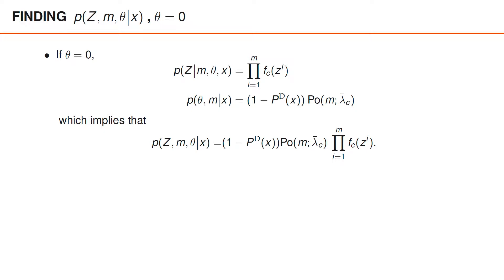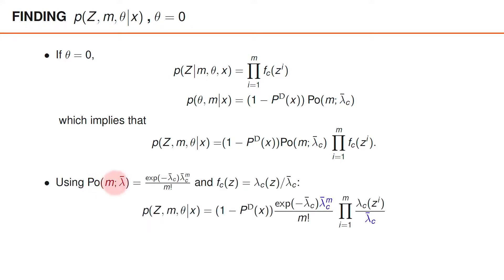To simplify things for us later on, we will express this distribution on a slightly different form by plugging in the expressions for the Poisson distribution and fc. The expression for this Poisson distribution is e to the power of minus lambda bar c times lambda bar c to the power of m, divided by m factorial. And the expression for the spatial distribution of the clutter detections fc is lambda c of z divided by lambda bar c. Using these expressions, we can write the distribution of z, m and theta given x. The factors lambda bar c, marked in blue, appear in two places and actually cancel out, giving us the following final expression.